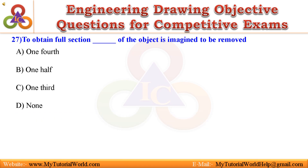Question 27. To obtain a full section, one half of the object is imagined to be removed. A. One fourth, B. One half, C. One third, D. None. Answer is One half.